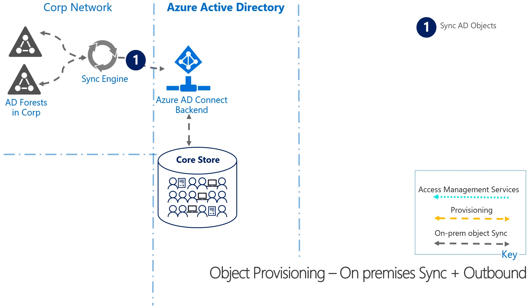Every component on-prem follows an agent pattern relationship and has a sister service on the cloud that they talk to. The sync engine on-prem talks to the Azure AD Connect backend, which is a SOAP-based web service that sends the objects back to the cloud directory.